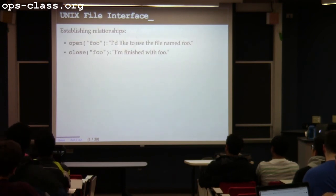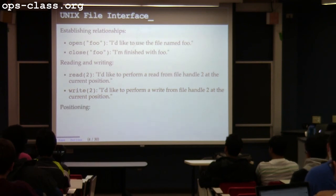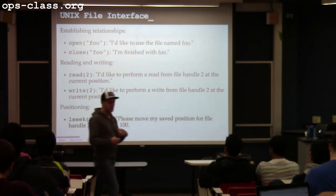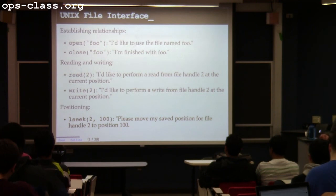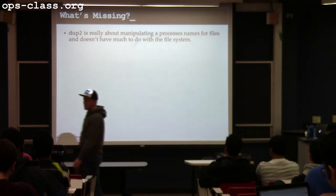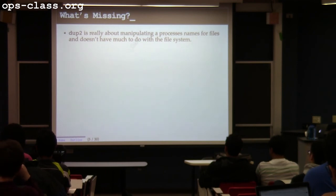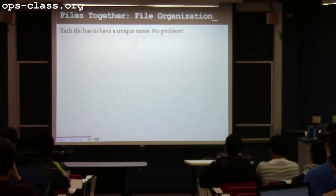So we started talking about the Unix file interface. We went through this quickly at the end of class last time. These are ways that I can establish relationships between files. After you've implemented assignment two, you understand the semantics of this particular interface — in terms of how I decide that I want to use a file, how I actually read and write from that file, and how I can reposition the file pointer, which is normally updated implicitly. If you think about it, dup2 really isn't a file system system call — it doesn't actually use any of the underlying VOP calls because it's really more about the mappings presented to the process.